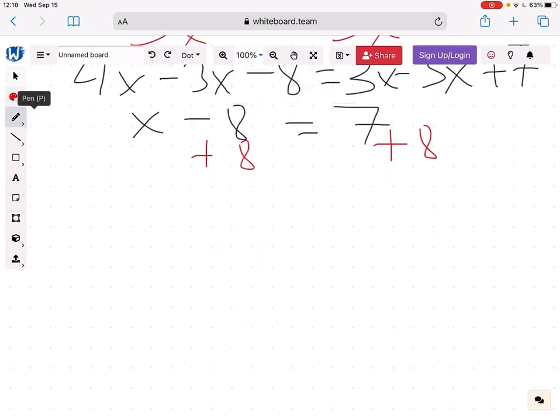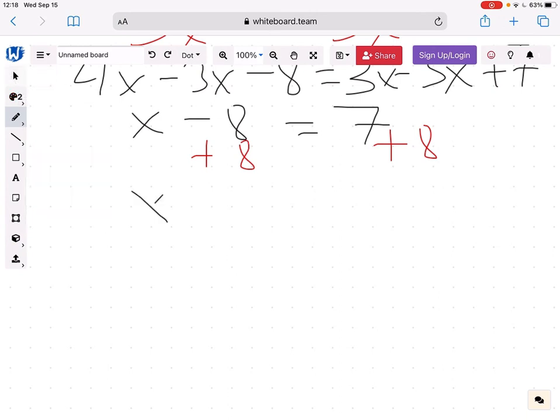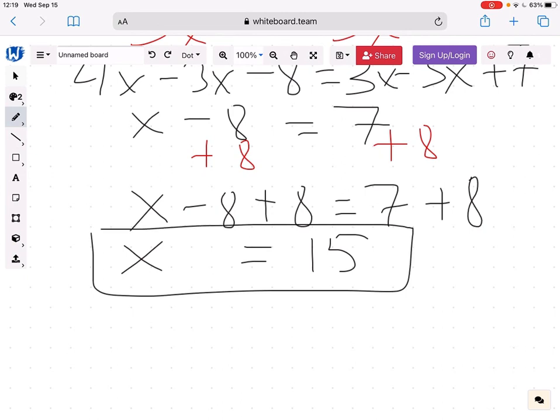And what we're going to get after this is x minus 8 plus 8 equals 7 plus 8. So on the left, I'm going to have x, minus 8 plus 8 gives me 0, so there's nothing to add. And on the right, I get 7 plus 8, and that is 15. So that's how we find x.